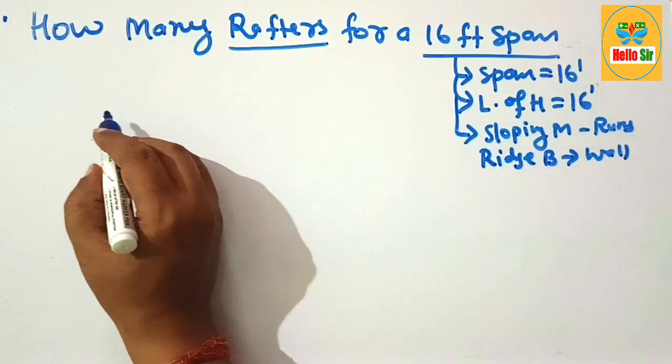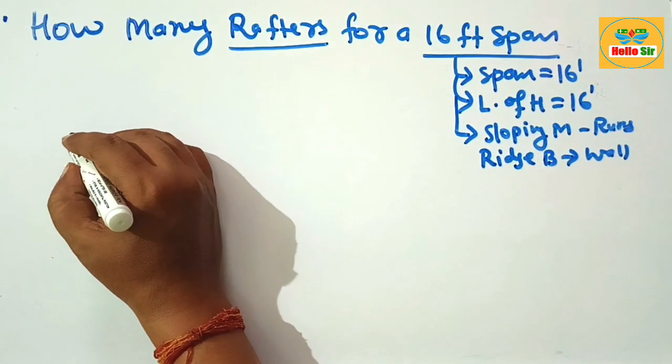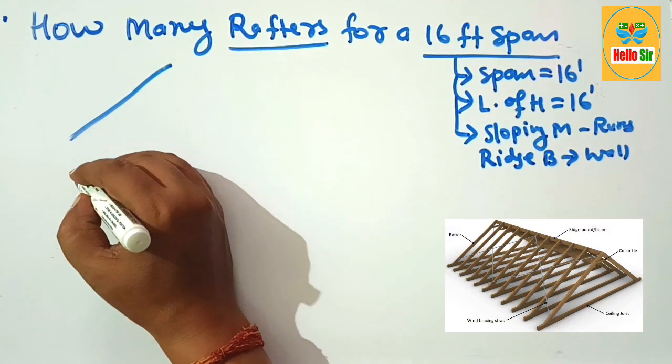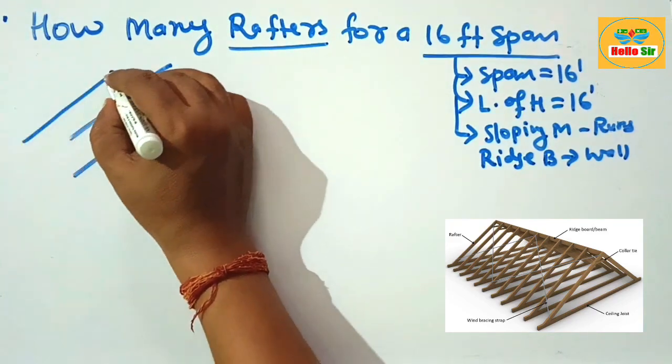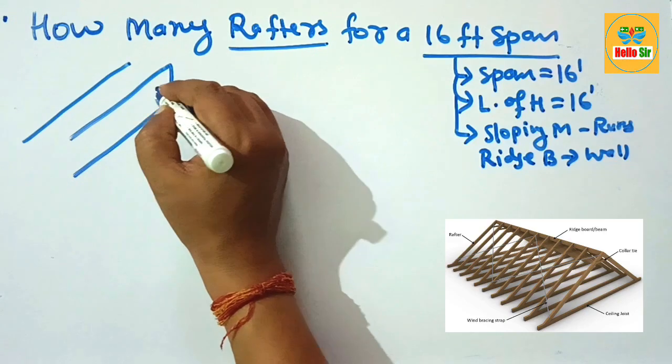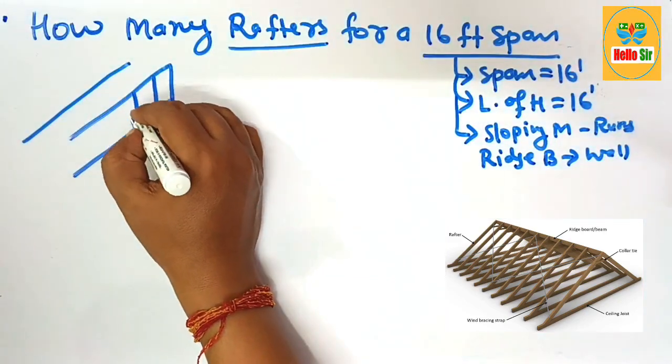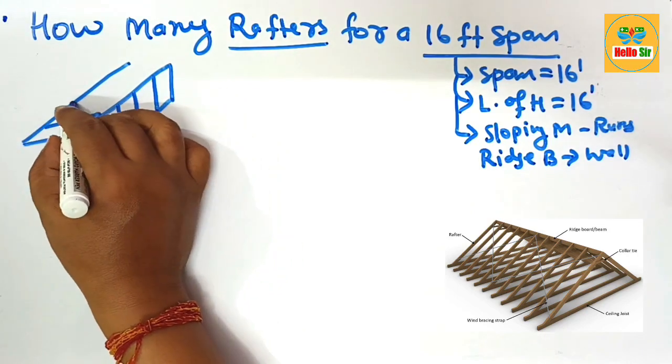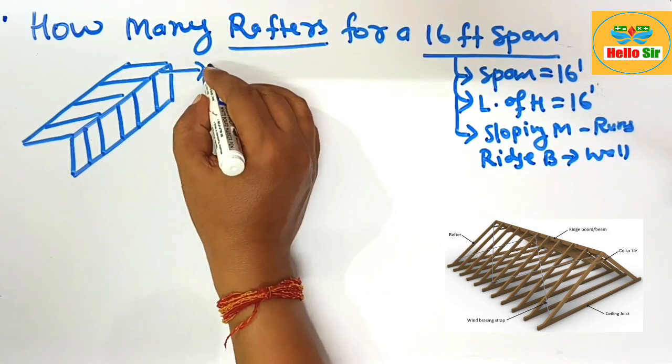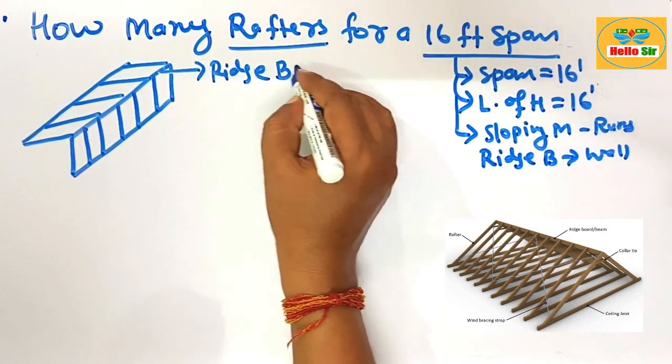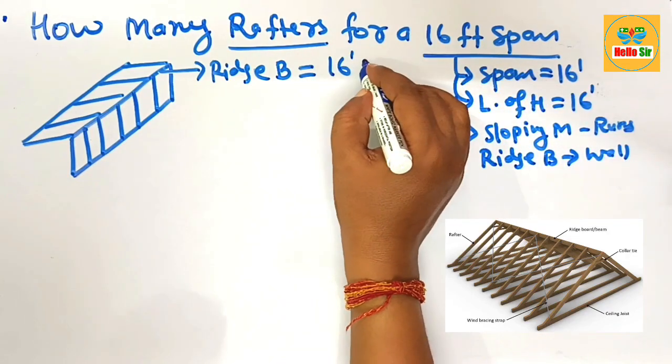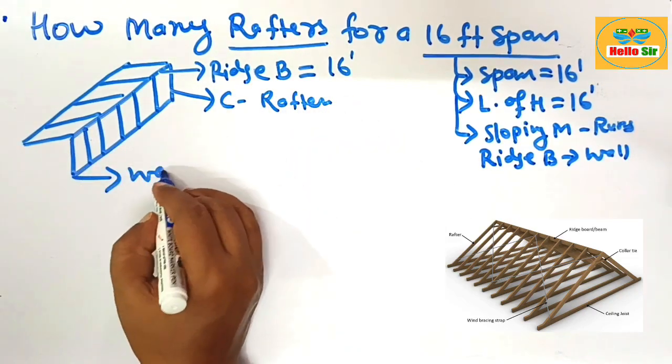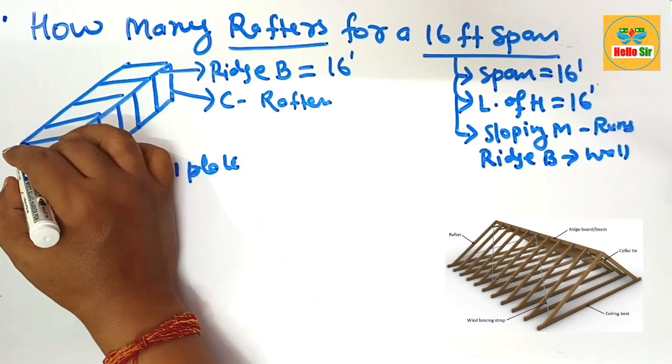First, you make a rough diagram to understand the roof framing system. Suppose this is the ridge beam and the rafters are connected to that. This is a rough diagram. The rafter comes from the ridge beam and connects to the wall plate. The distance between the two walls is the ridge beam span of 16 feet. This is the common rafter, this is the wall plate, and this is your ceiling.